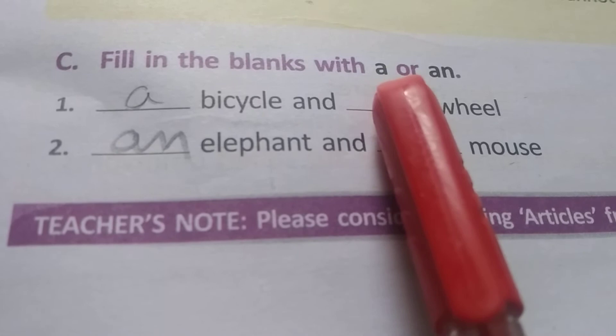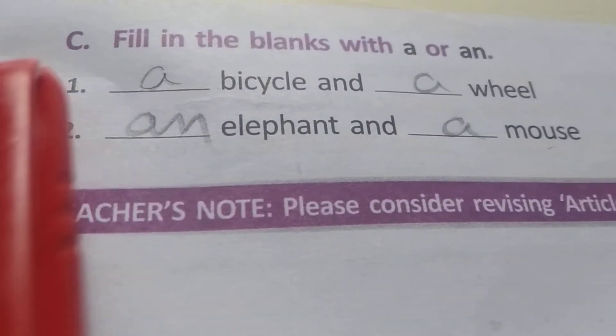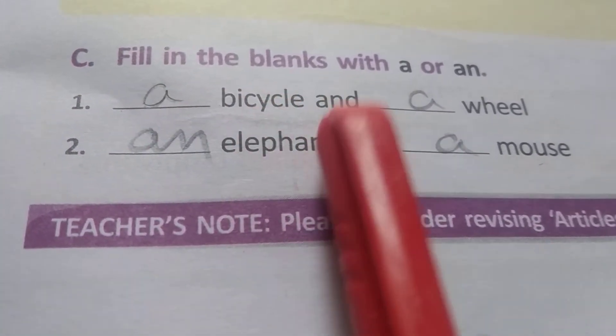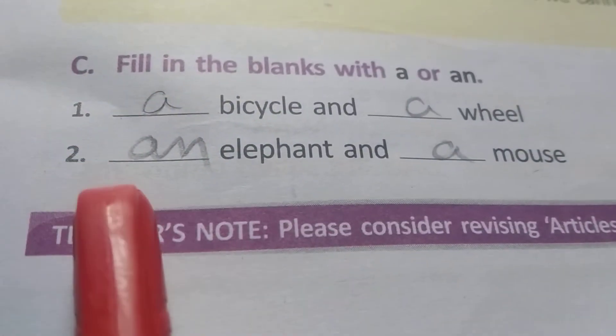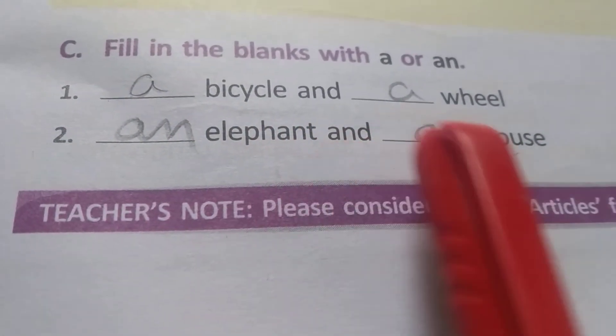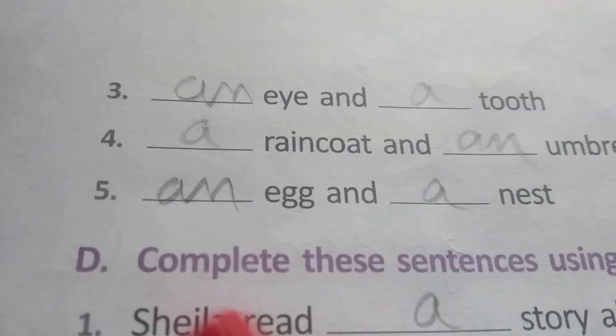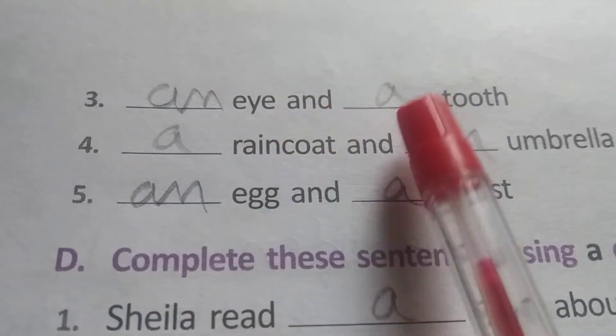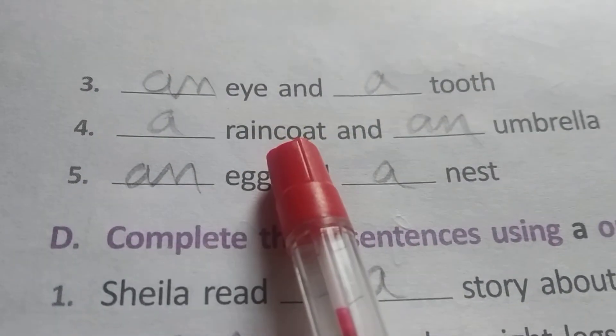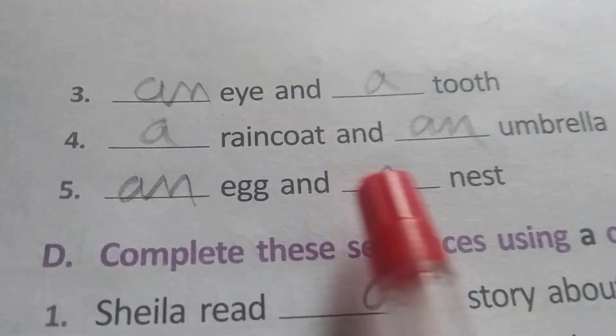Fill in the blanks with a or an. A bicycle and a wheel. An elephant and a mouse. An eye and a tooth. A raincoat and an umbrella. Look here, umbrella. An egg and a nest.